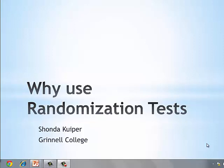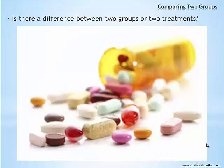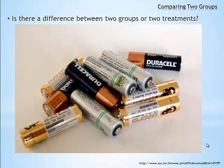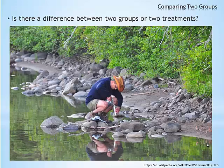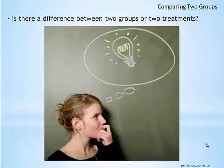We are often interested in determining if there is a difference between two groups or two treatments. For example, in medical research, we often want to know which medication is most effective in stopping a disease. You may be interested in buying batteries for your gaming system — do generic or brand name batteries last longer? When testing water quality, do the pesticide levels depend on whether you take the water samples near the surface or near the bottom of a river? In education, are certain types of learning strategies better than others in increasing your memory skills?